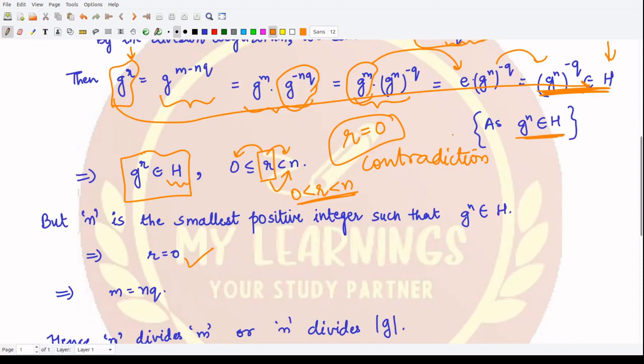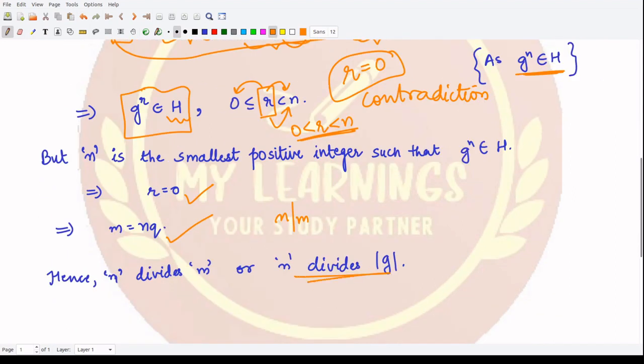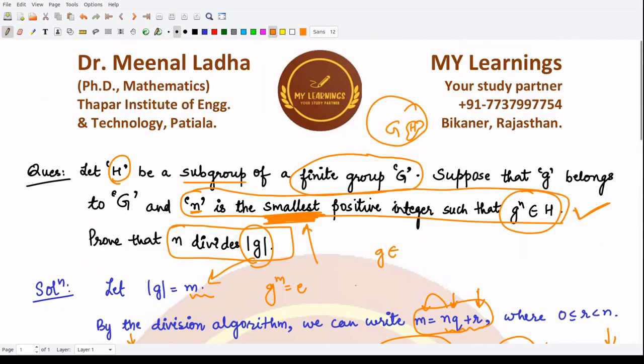If r is 0, from here what do you get? You get m is equal to nq. So from here you clearly see n divides m, or n divides the order of g, and this is what we wanted to prove. So I hope you understood this question well. That is it for this video, thank you for watching.